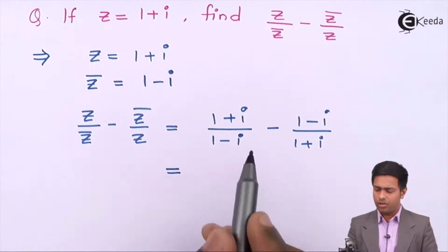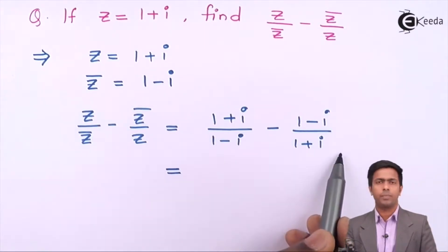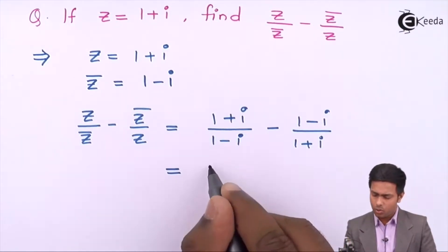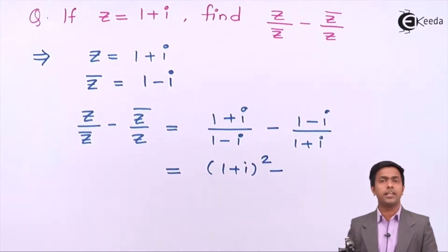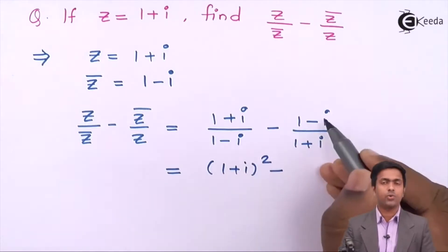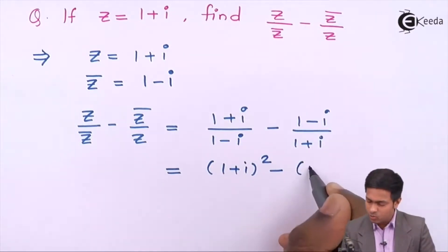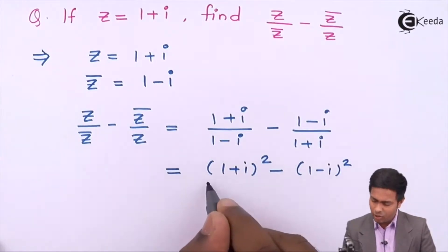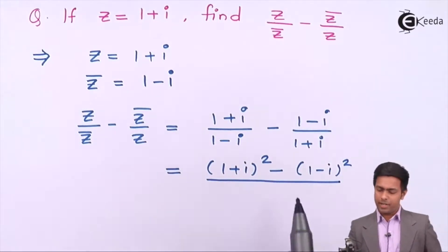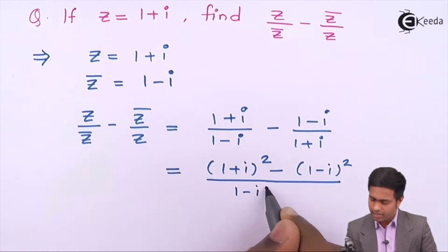By LCM here we will get (1 plus i) into (1 plus i), that is (1 plus i) the whole square, minus (1 minus i) into (1 minus i), that is (1 minus i) the whole square. Now in the denominator we will multiply these two terms, so we will get (1 minus i) into (1 plus i).